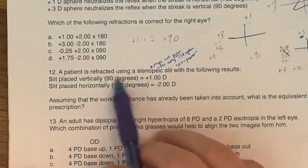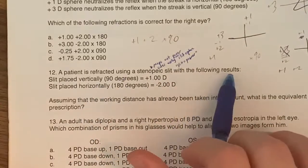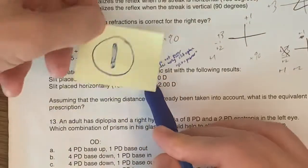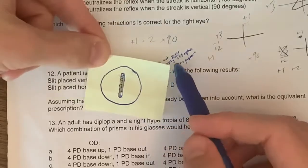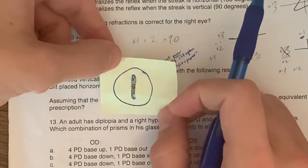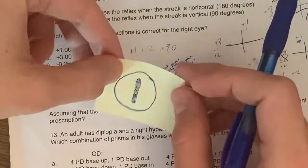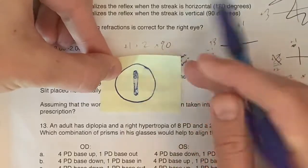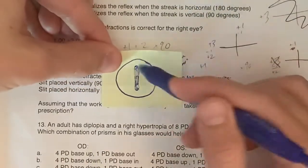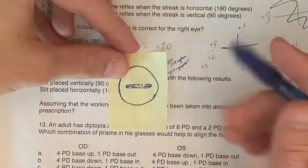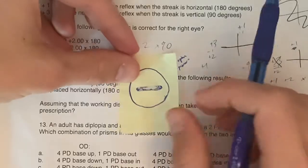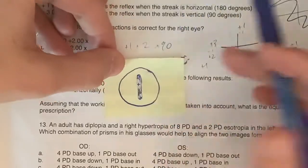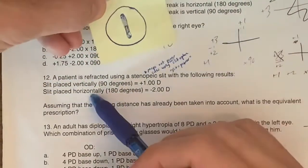Number 12, a patient is refracted using a stenopaic slit with the following result. What the heck is a stenopaic slit? It's just a slit. Stenopaic comes from Greek, it just means narrow. It's just a narrow slit. I like to think about it as a linear pinhole, a one-dimensional pinhole. The way it works is you measure the power of the eye. If you held it like this, you'd measure the vertical power of the patient. If you held it horizontally, you'd measure the horizontal power of the patient's eye. If you added those two, you'd make a power cross and then you can convert that to a prescription.